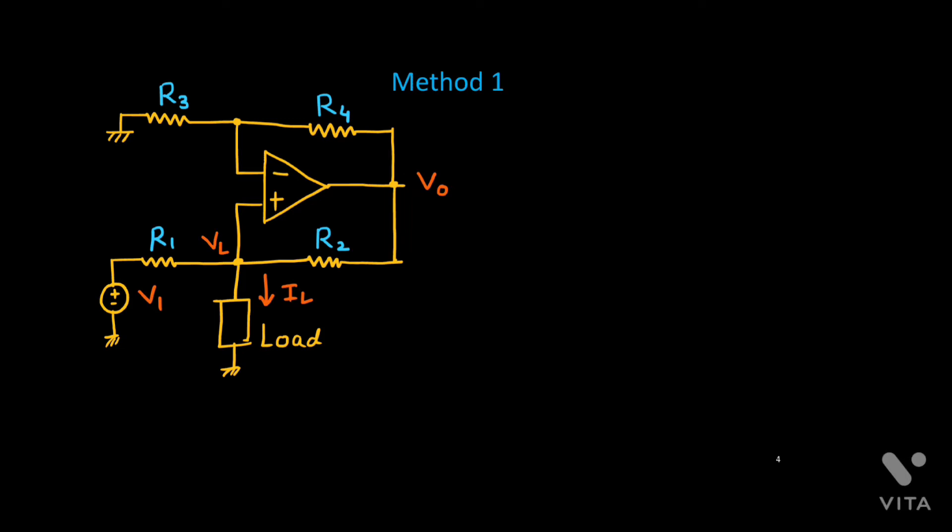I will provide you two methods. In the first method, we will consider the load potential. This load potential is VL and this output voltage is V0. This source is V1, resistance R1, this is R2, this is R3, R4, here it is grounded and here is output voltage V0.